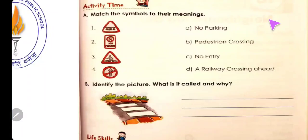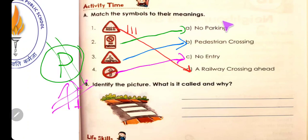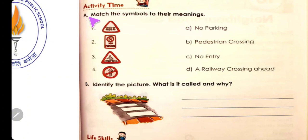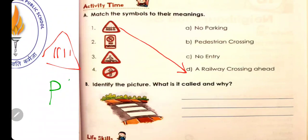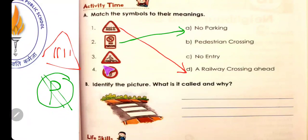Now come to question Part E: match the symbols to their meanings. आपको symbols को उनके meanings से match करना है। Number one: you write a P, and P को cross करके - that means no parking. So this symbol means no parking.